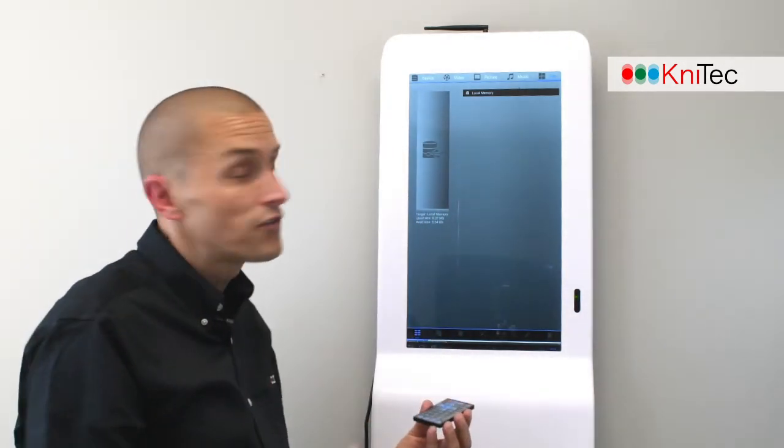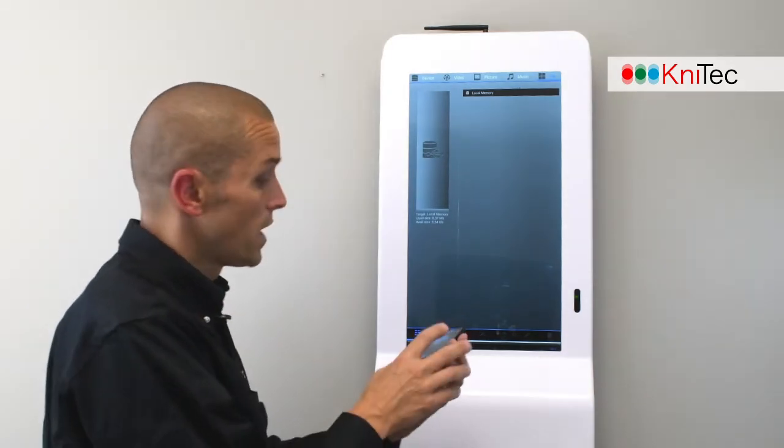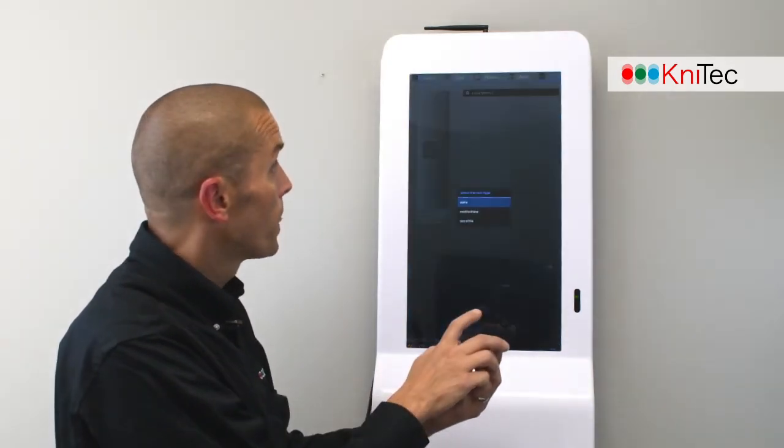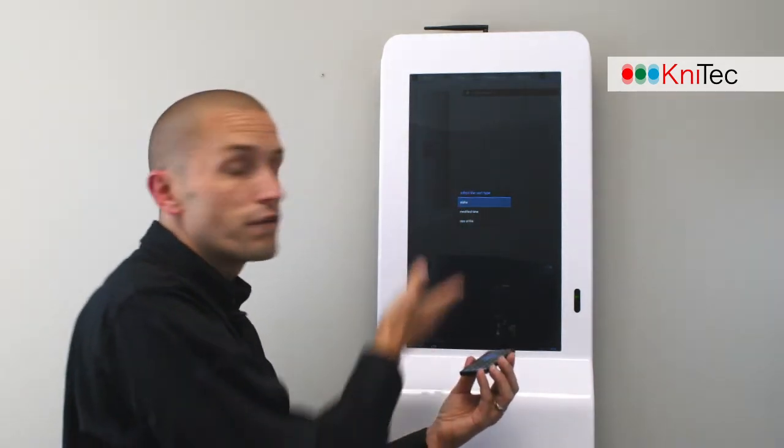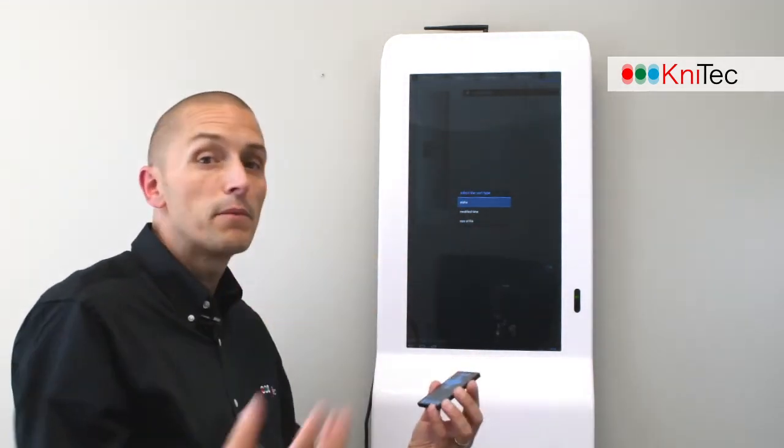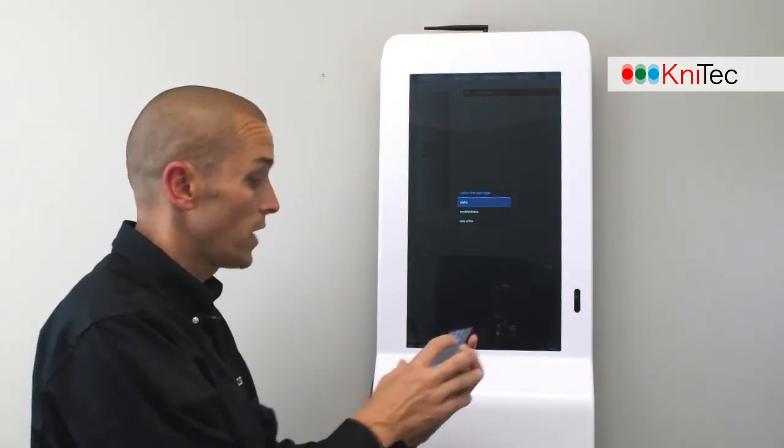You can see up the top left is device. So you've got file, music, picture, video, and device. So this is where you would choose your device. You've got video files, picture files, music files. And then you've got file. And you can see I just selected file. And this is where your files would be if they were on the memory of the media player.